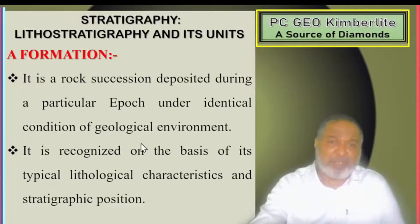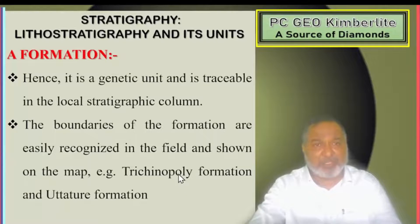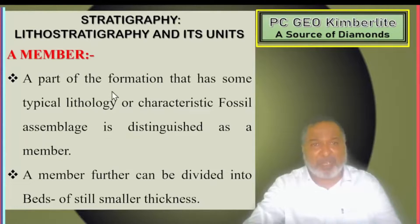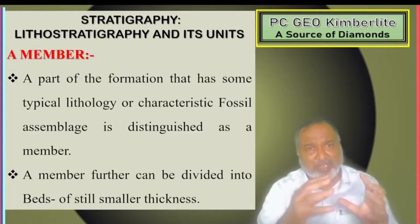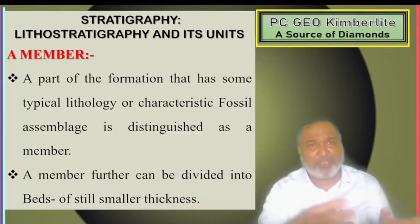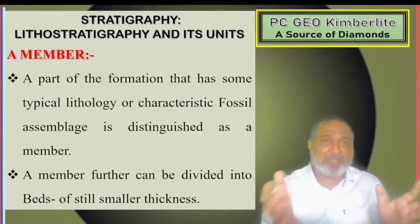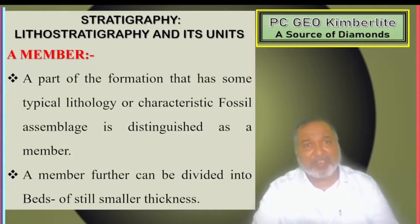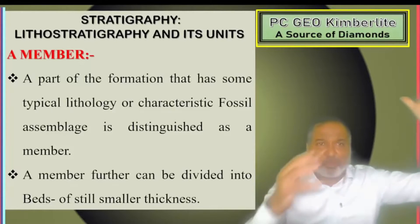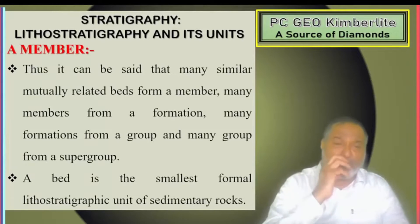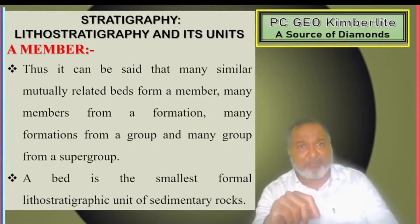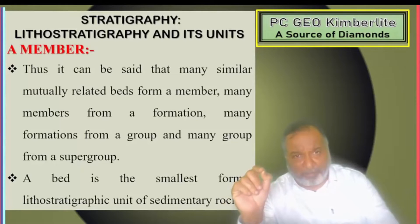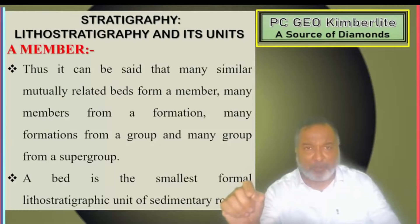Formation is made up of mainly mutually related members; many formations of the same mutual relation give rise to a group. A formation is a fundamental unit in the local classification of rock — a rock succession deposited during a particular period under identical conditions of geological environment, recognized on the basis of typical lithological characteristics and stratigraphic position. Member: a part of the formation that has some lithological characteristics or characteristic fossil assemblages is distinguished as a member. Many similar mutually related beds form a member, many members form a formation, many formations form a group, and many groups form a supergroup.